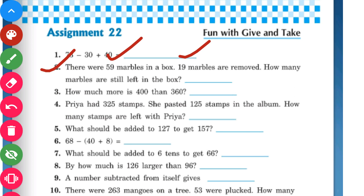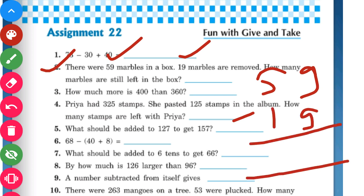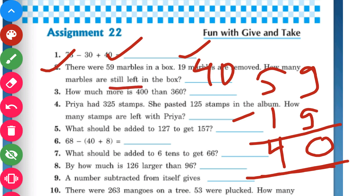We will subtract: 59 minus 19. Starting from the ones place — 9 minus 9 gives us 0, and 5 minus 1 gives us 4. So our answer is 40. That means 40 marbles are still left in the box.